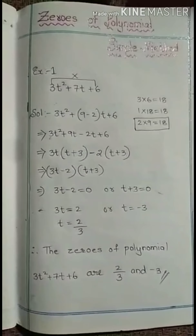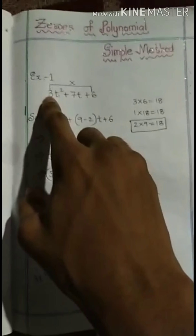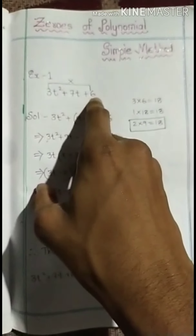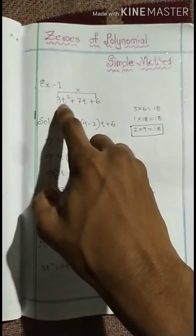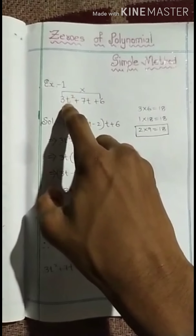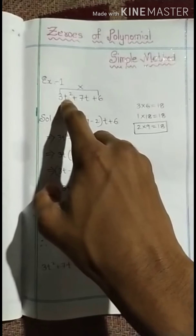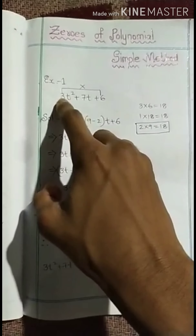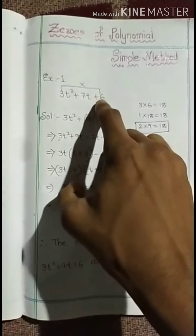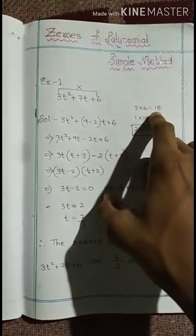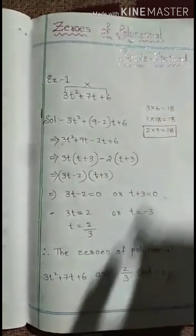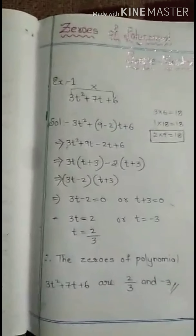The first step to find a zero of a polynomial is to multiply the first and last numbers — that means the coefficient of t² and the constant. You will get 3 into 6 equals 18.